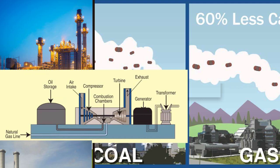Some gas power plants are designed as combined heat and power (CHP) plants, also known as cogeneration plants. In addition to generating electricity, they capture and utilize the waste heat for heating or industrial processes, increasing overall energy efficiency.